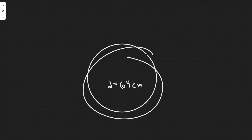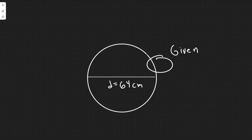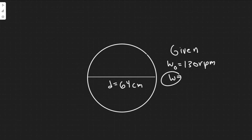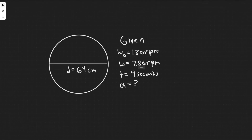We're given this wheel and a bunch of information, so let's write that down first. They tell us it's going to accelerate from 130 rpm to 280 rpm in four seconds. The way we're going to solve this is like kinematics but for something that's rotating — it's all the same except you replace the linear variables with the rotating ones. So regular acceleration becomes angular acceleration, and so on.